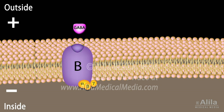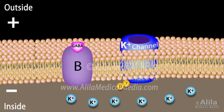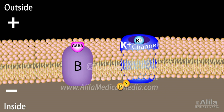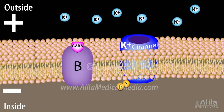GABA-B acts through a G protein to activate potassium channels, which allow positively charged potassium to flow out of the cell, again resulting in membrane hyperpolarization and a subsequent decrease in neuron responsiveness.